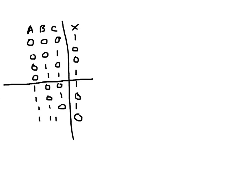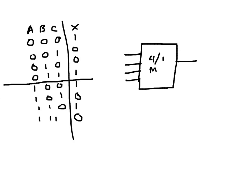I want to implement this truth table function X using a 4-by-1 multiplexer. The truth table is the same as the previous video, but here instead of an 8-by-1 I have a 4-by-1 multiplexer. With a 4-by-1 MUX I will have two select pins, and inputs I0, I1, I2, and I3.